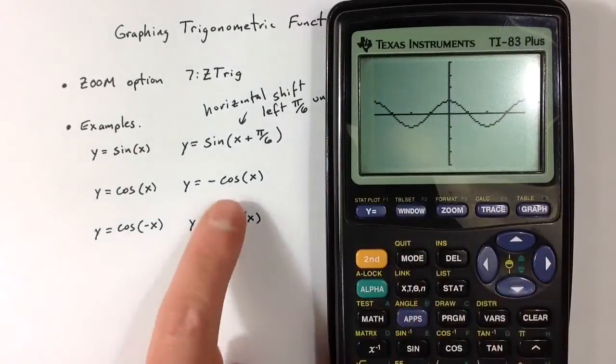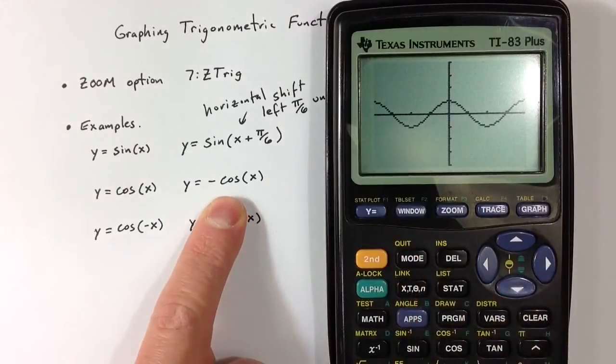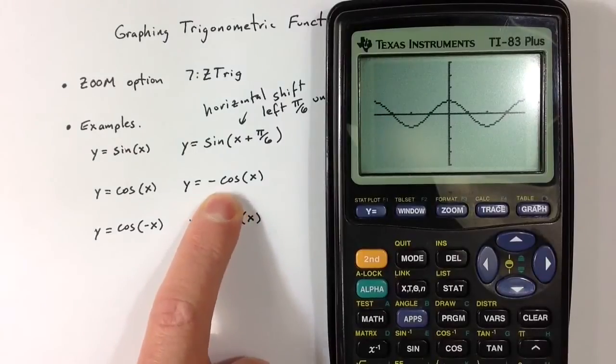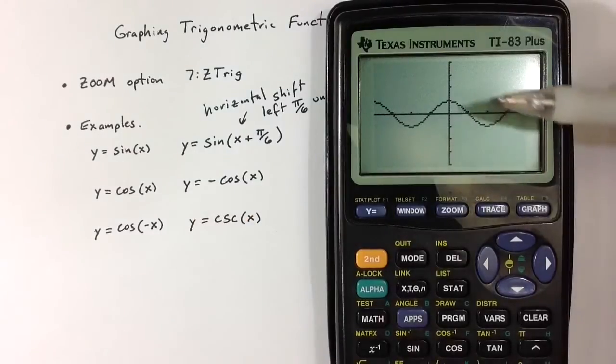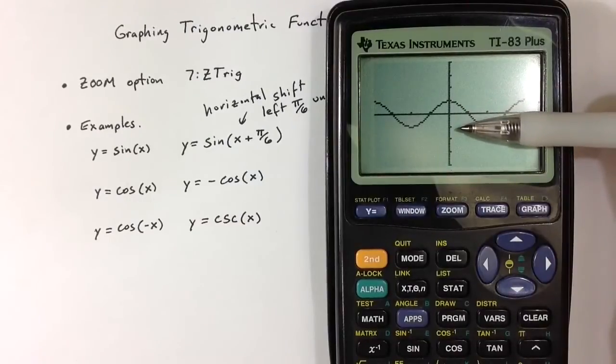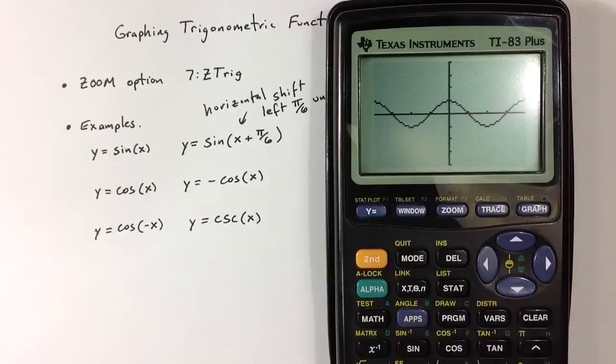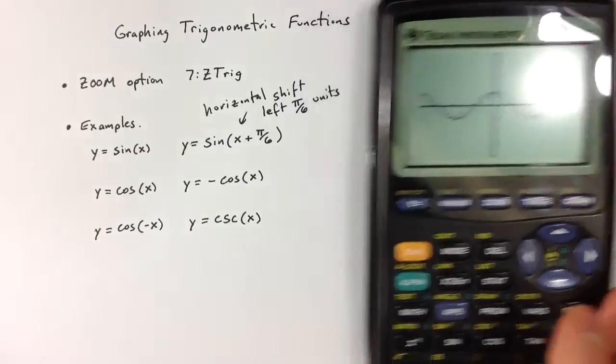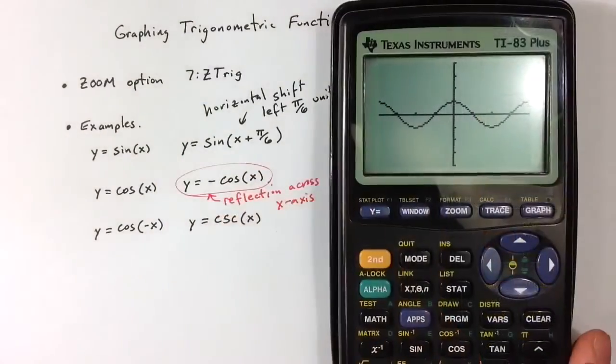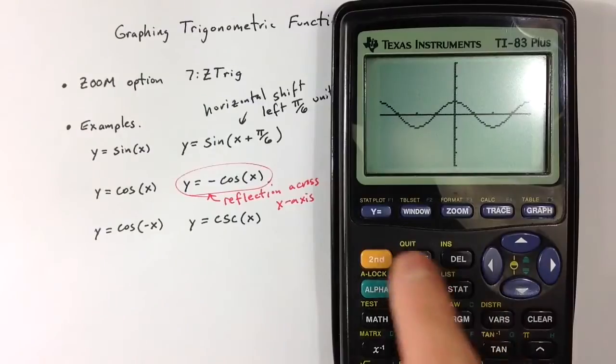And let's compare that to what do you think negative cosine of x is going to look like? That's happening outside of the function, and essentially it's going to take all the y values and shift them. When they were positive, the y values are going to become negative. And when they were negative, they're going to become positive. So essentially this is going to be a reflection across the x-axis.